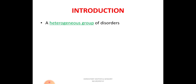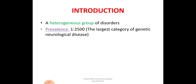Starting with the introductory part: HMSN is a heterogeneous group of disorders, meaning they are diverse in character. Two patients with the same diagnosis may present with different clinical features. The prevalence is one out of 2500, making it the largest category of neurological disease of genetic origin.